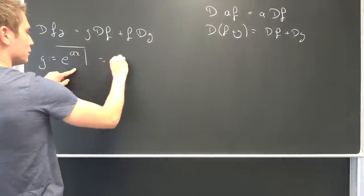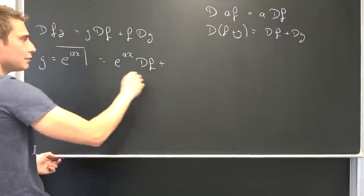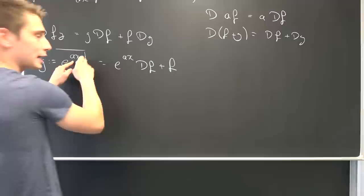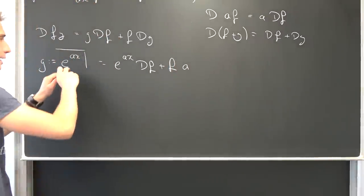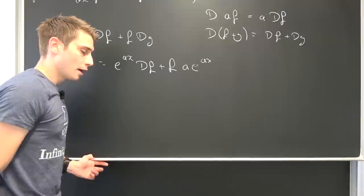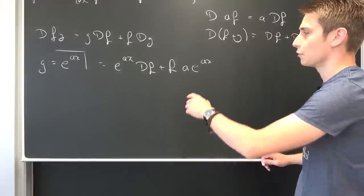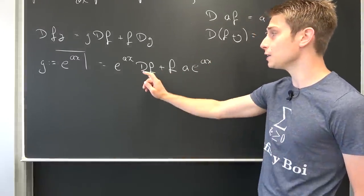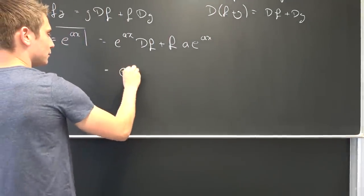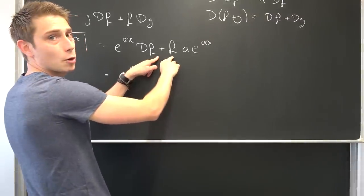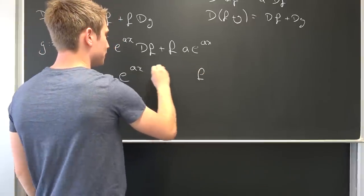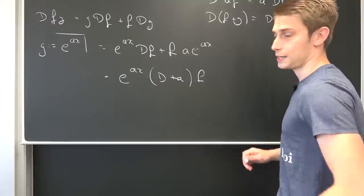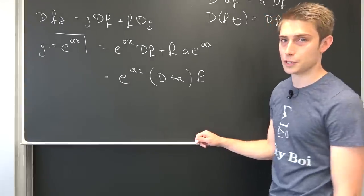Then we are going to have the product rule giving us e^(ax) times Df plus f times D of e^(ax). We know how differentiation on the exponential function works: we are going to drag the a to the front — that's why I parameterized it — and then multiply by e^(ax). Now we have e^(ax) as a common factor, and f as a factor on the right. Meaning we can factor everything out and we are left with e^(ax) times (D + a) times f. This right here is actually the first step to proving the exponential shift theorem.